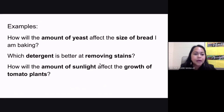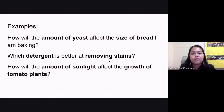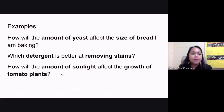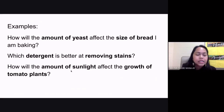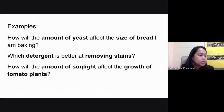You also have other examples: which detergent is better at removing stains? — showing the relationship between different types of detergent and their effectiveness at removing stains. The last example is: how will the amount of sunlight affect the growth of tomato plants? This cannot be answered by a yes or no, requires experimentation, and shows the relationship between the amount of sunlight and the growth of tomato plants — your independent and dependent variables.